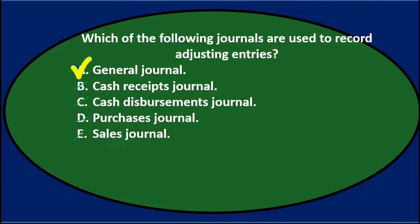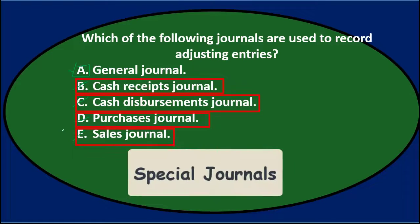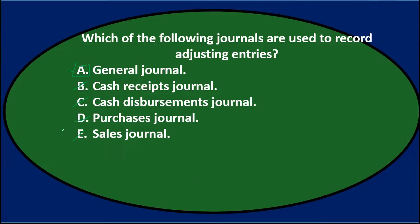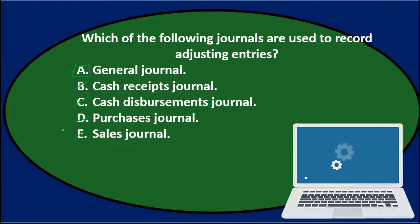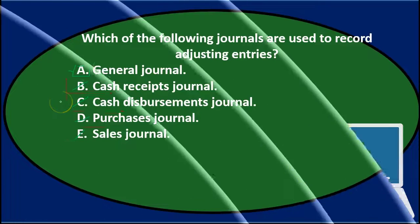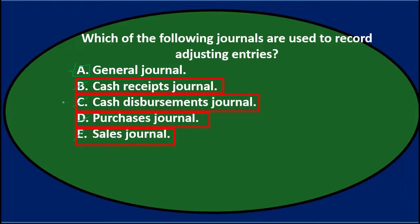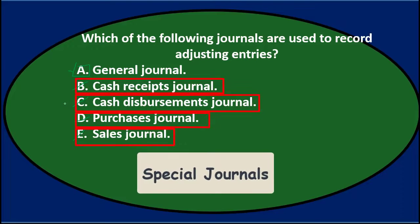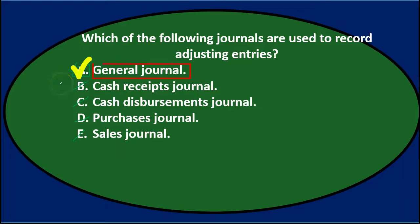So we're left with just the general journal — the default journal used when transactions don't fit in any other account. That's the nature of adjusting entries. Even when using special journals, adjusting entries are unusual, end-of-period adjustments that don't fit a normal special journal format. The answer is A, general journal.